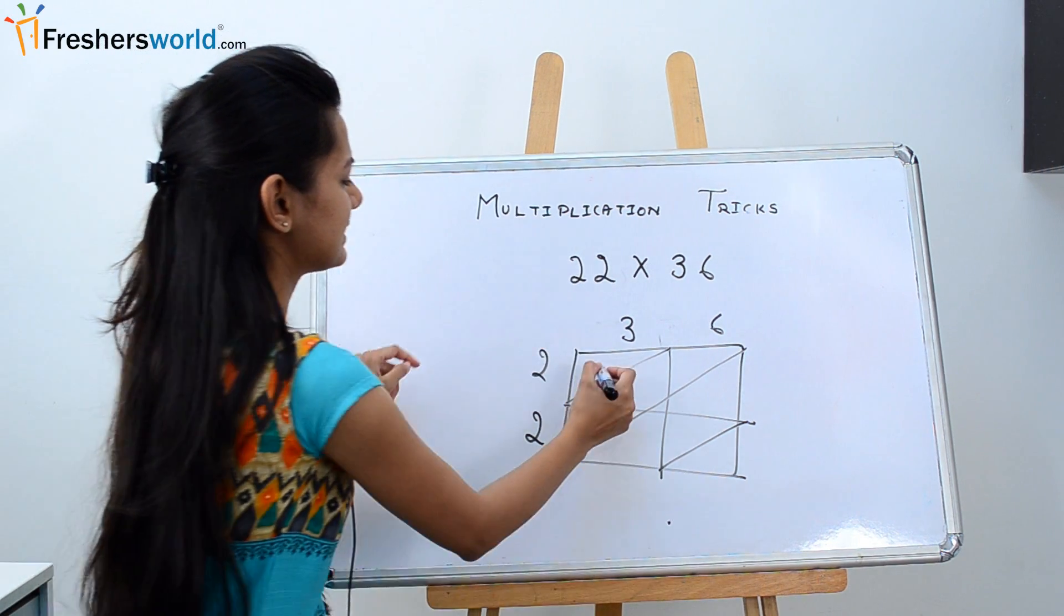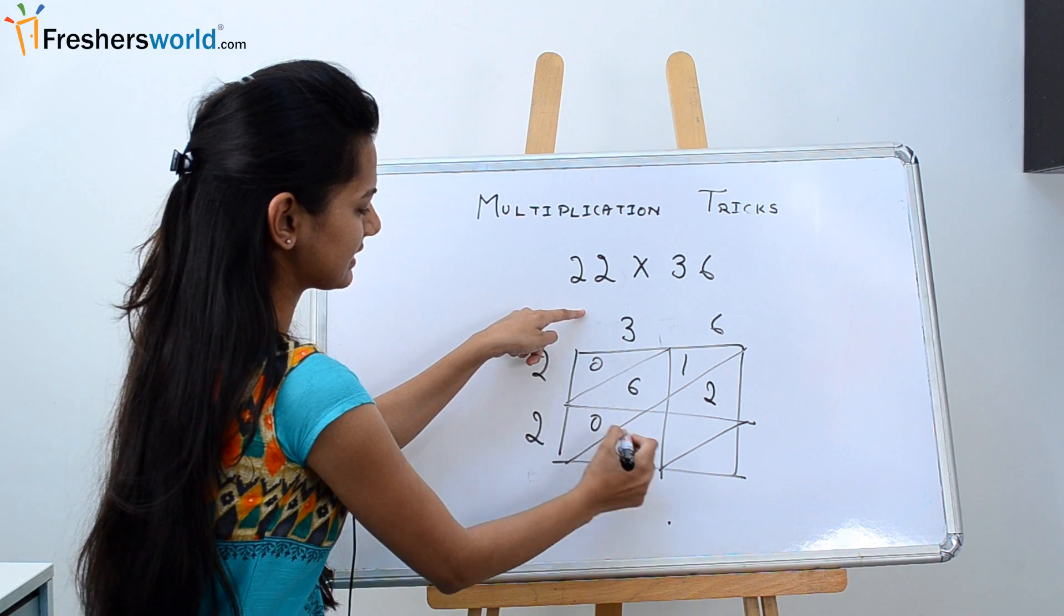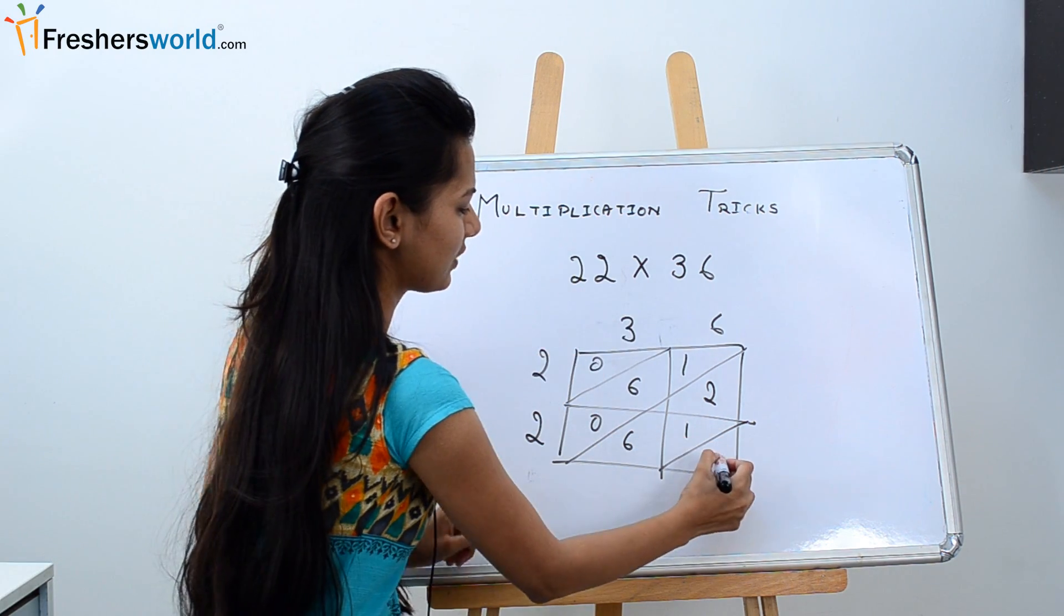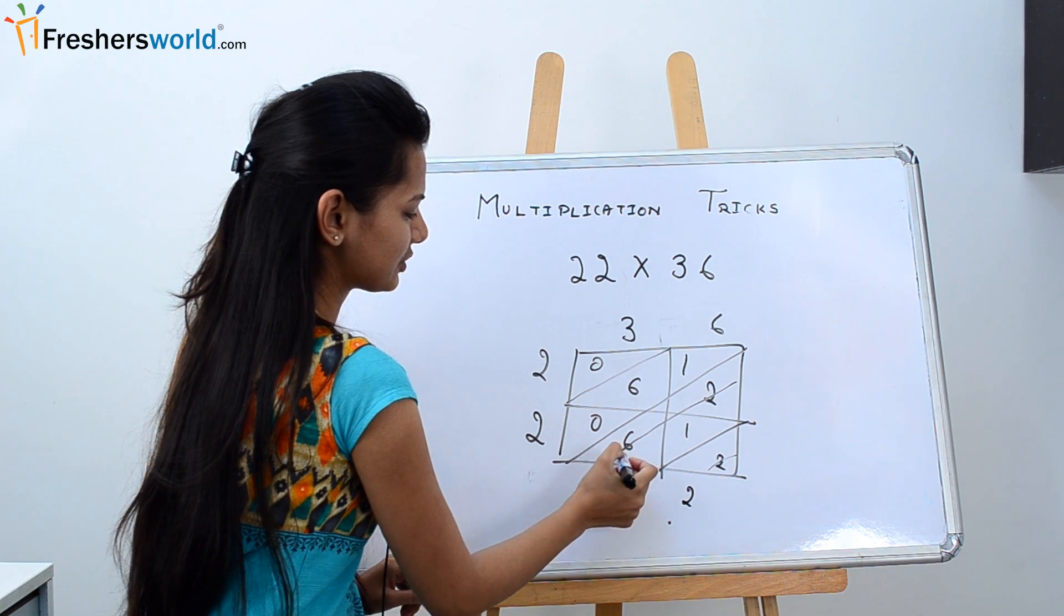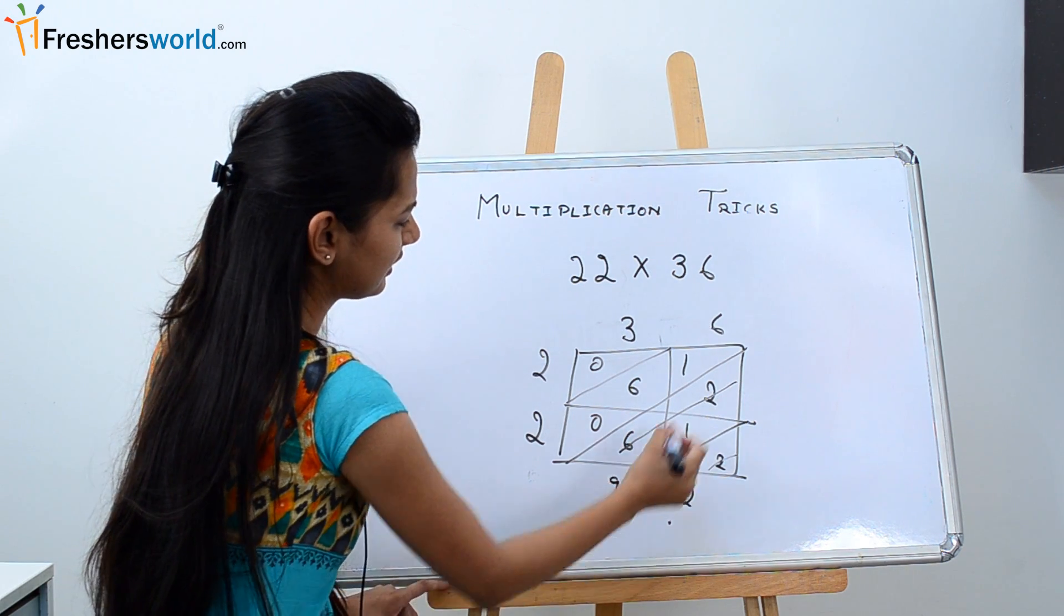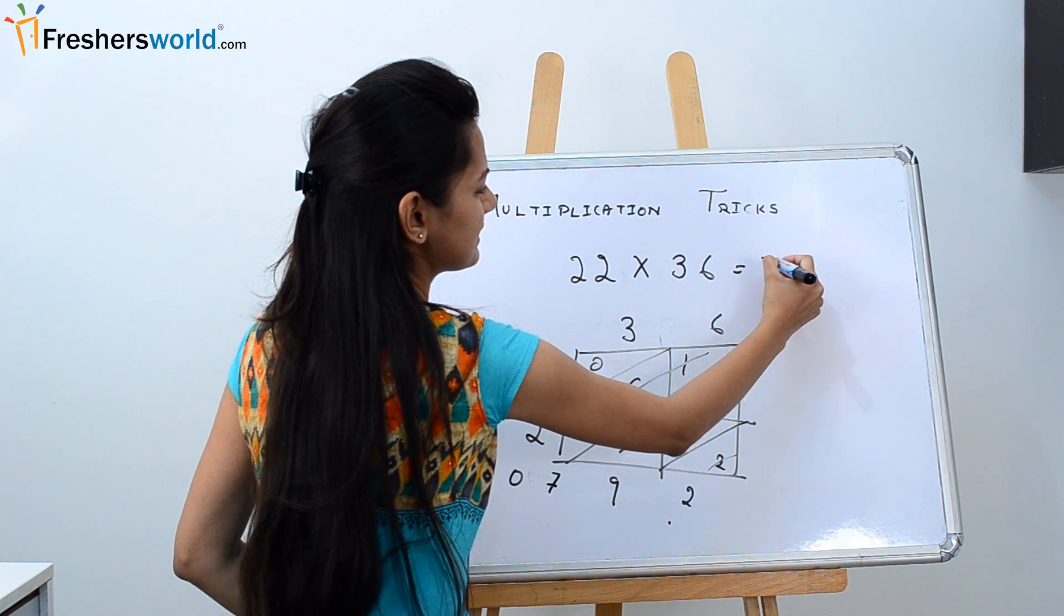Now again, 2 times 3 is 6. 2 times 6 is 12. Then 2 times 3 is again 6, and 2 times 6 is 12. Then add: 2, 6 plus 2, 9, 6, 7, 9, 6 plus 1, 7, and 0. So the answer is 792.